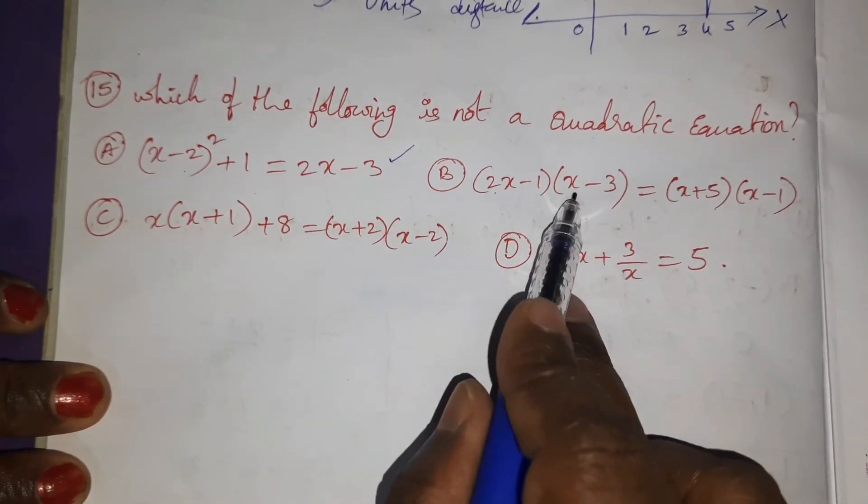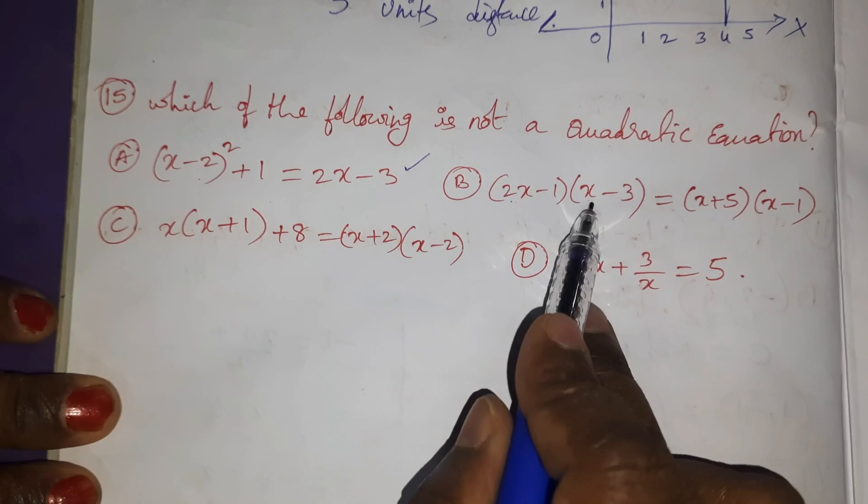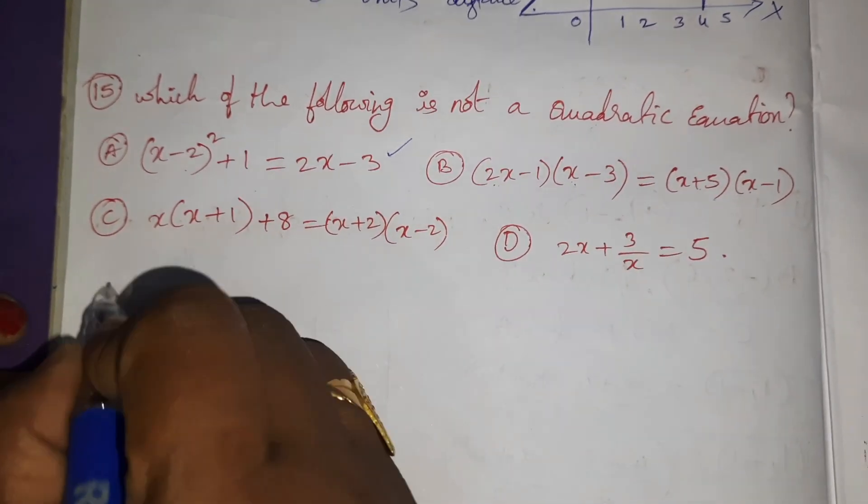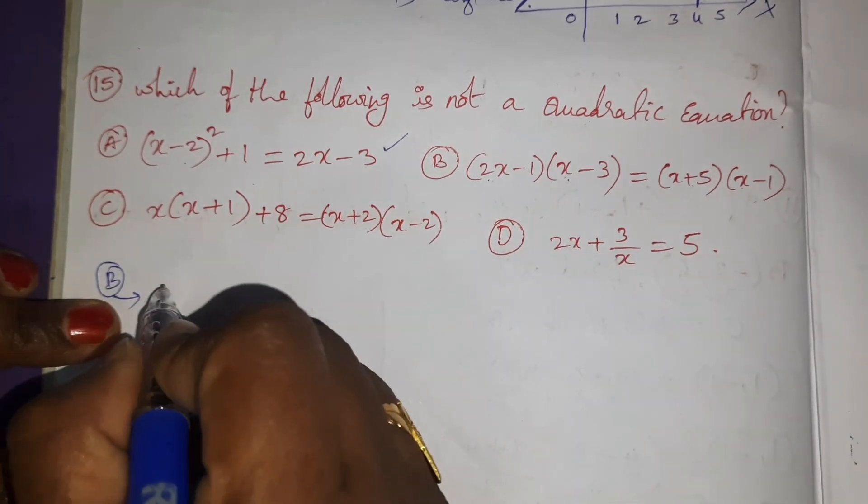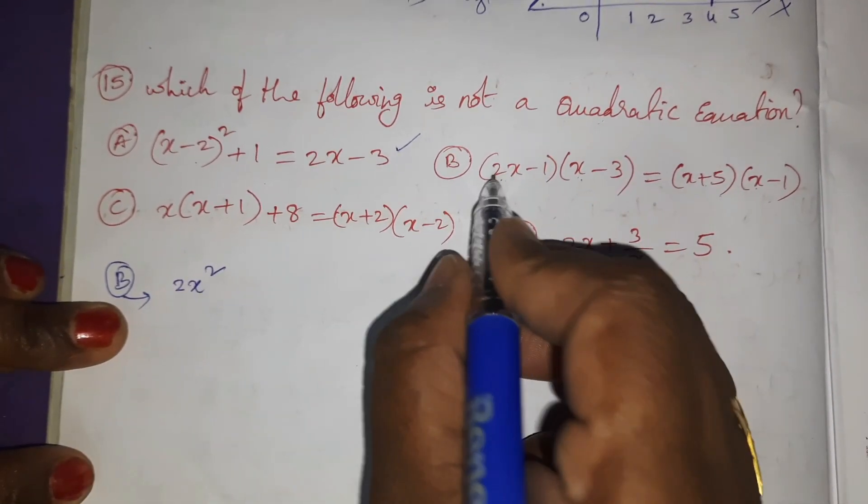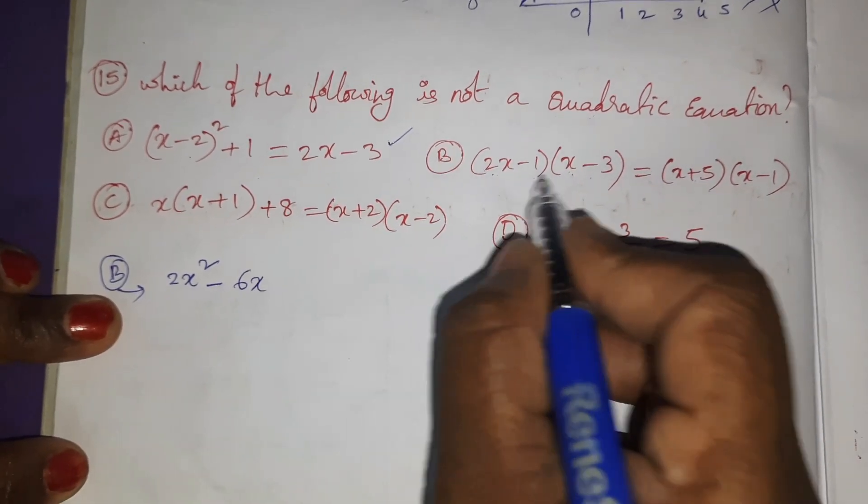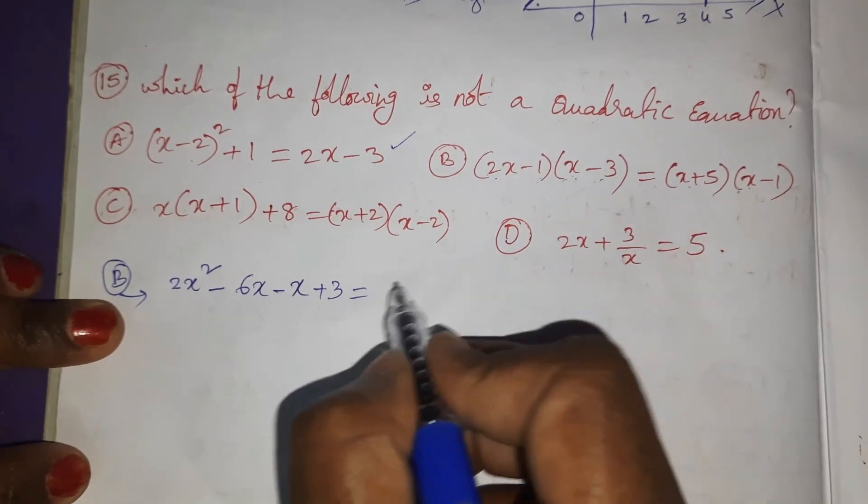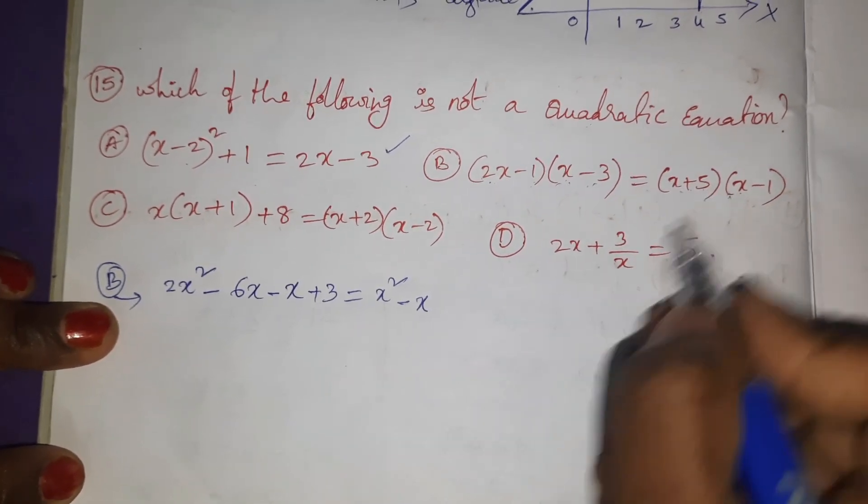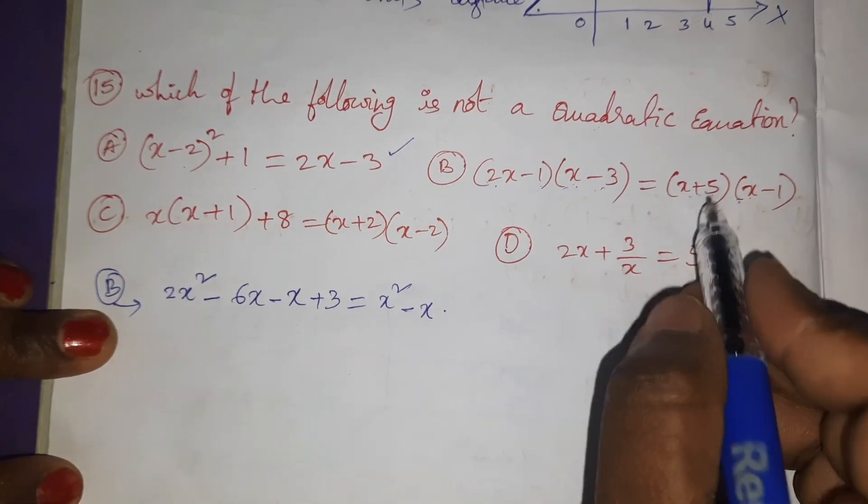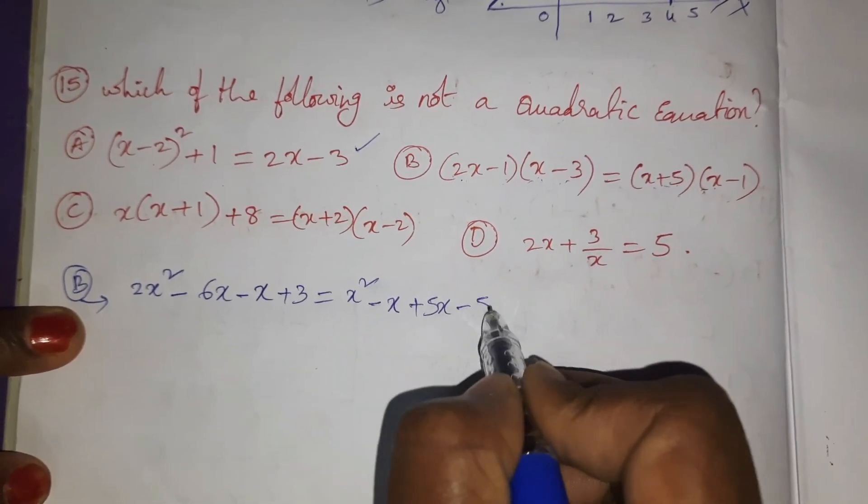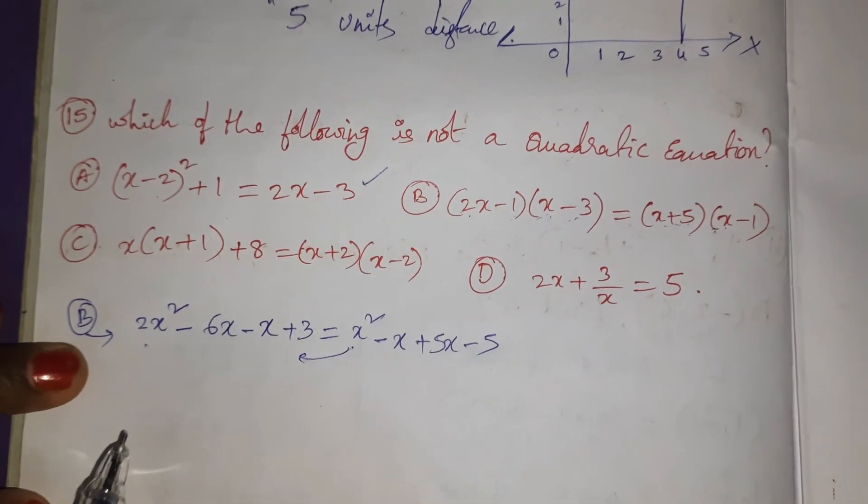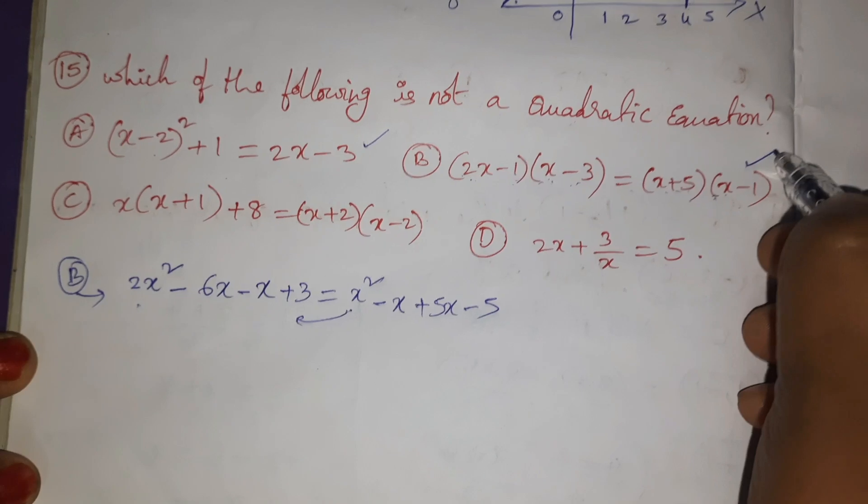And here 2x², 2x × x is 2x², x × x is x². So coming to the B option it will be 2x² - x - 6x + 3 = x² - x - 5x - 5. So here 2x², here x² is there. After some simplification also one more x² left off, so it is also quadratic equation.